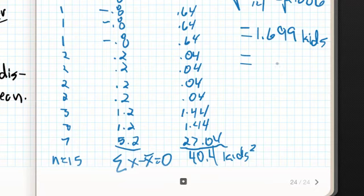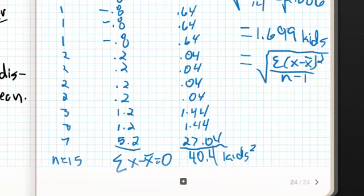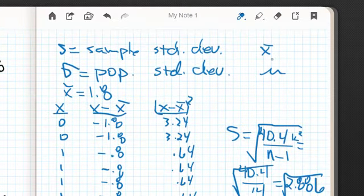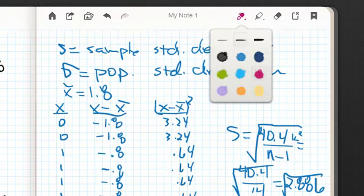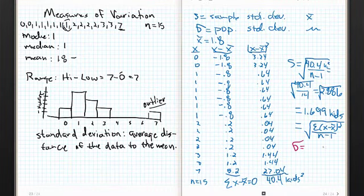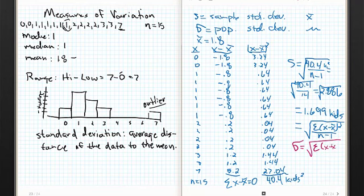The formula for sample standard deviation s is: the square root of the sum of (x minus x-bar) squared, divided by n minus 1. For population standard deviation sigma, it's the exact same formula except you divide by capital N — the number in the population — instead of n minus 1.